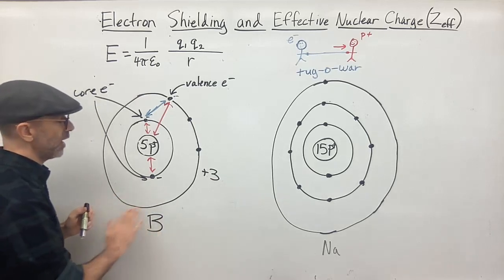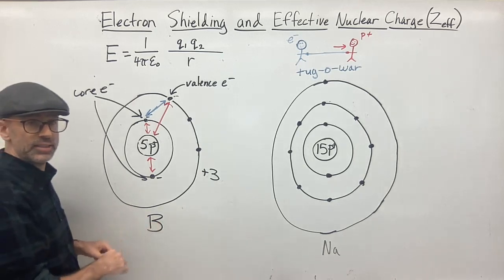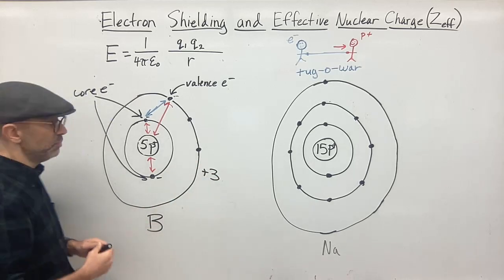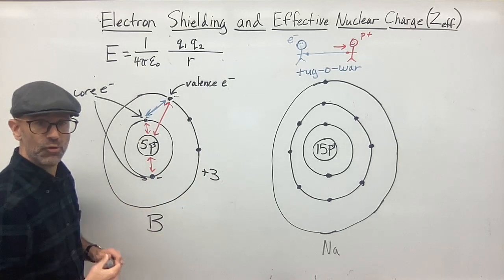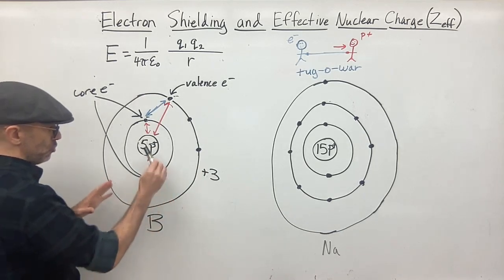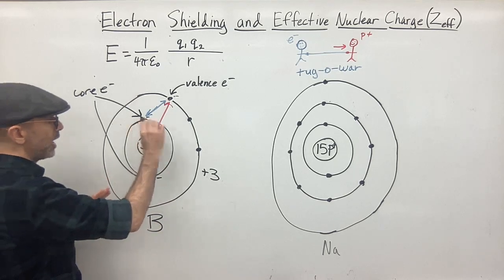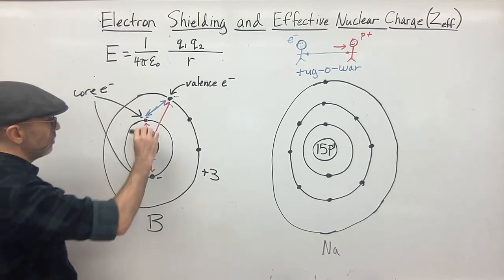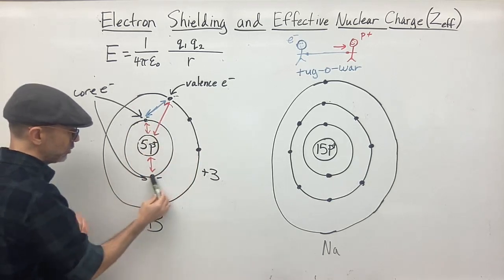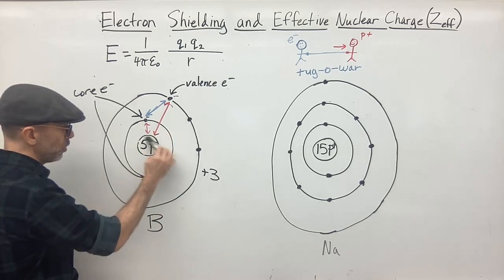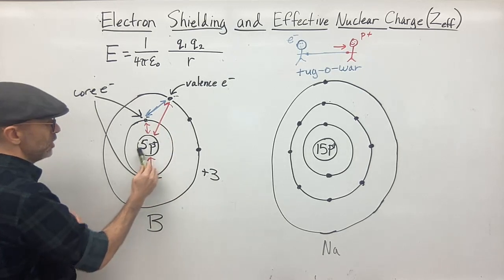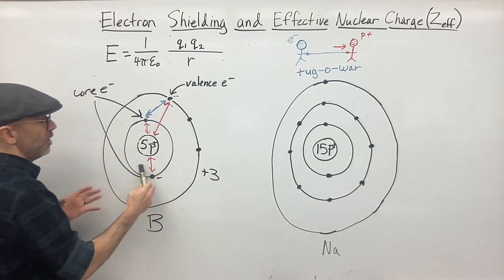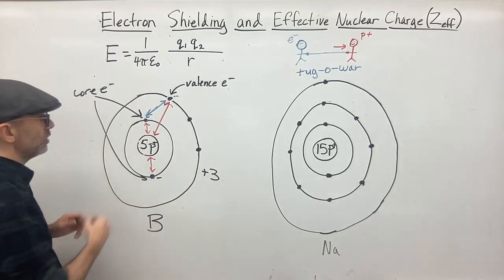We can keep going. What we notice as we go across the periodic table — starting with lithium, then beryllium, boron, then carbon, nitrogen, oxygen, and so on — is that every time we add a new proton to the nucleus, we're not adding any more core electrons. So the shielding stays the same. We only cancel out two protons because we have two core electrons. The more protons we add without changing the number of core electrons, the greater the effective nuclear charge.